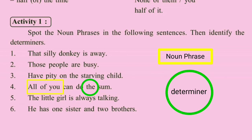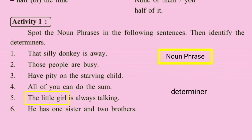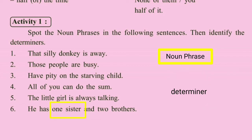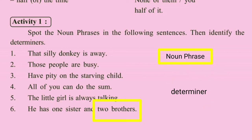The little gal is always talking. 'The little gal' is a noun phrase with head noun 'gal'. 'Little' is an adjective and 'the' is a determiner (article). He has one sister and two brothers. 'One sister' is a noun phrase with head noun 'sister' and 'one' as a cardinal determiner (numeral class). 'Two brothers' is another noun phrase with head noun 'brothers' and 'two' as a cardinal determiner.